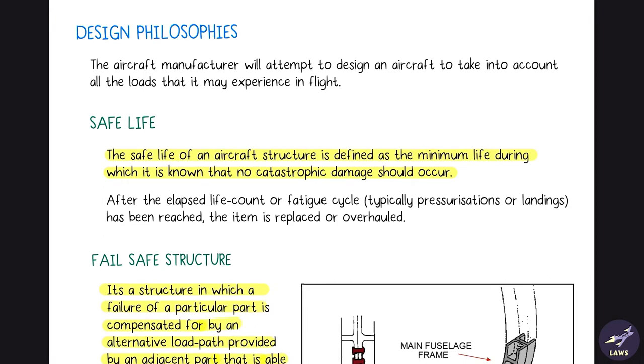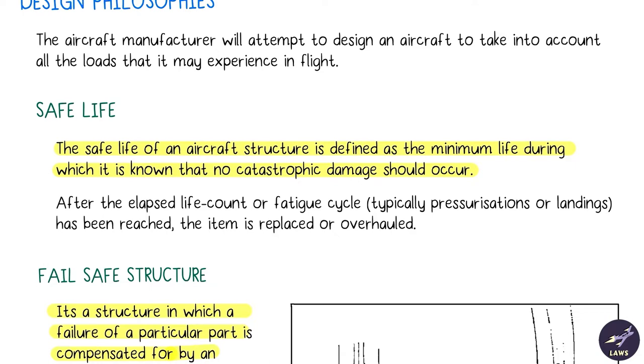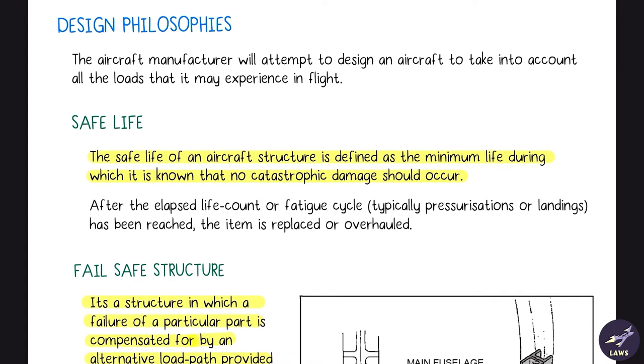Now we have design philosophies. First is safe life, defined as the minimum life during which it is known that no catastrophic damage should occur. Our modern airliners are all pressurized. It takes off, gets pressurized, then landing, then depressurized. This is one cycle. Every aircraft has maximum number of cycles. For example, 737 has a pressurization cycle of 85,000.